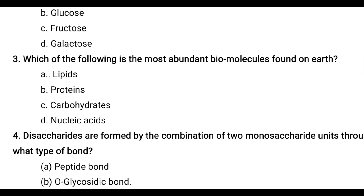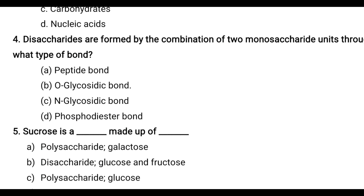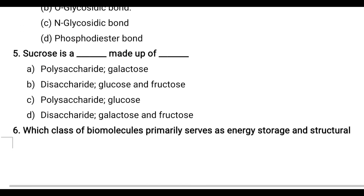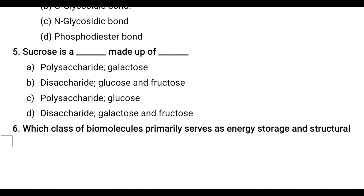Fourth question: Disaccharides are formed by the combination of two monosaccharide units through what type of bond? Options are: peptide bond, O-glycosidic bond, and phosphodiester bond. The bond between two sugars in a disaccharide is called the O-glycosidic bond.